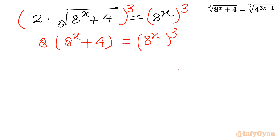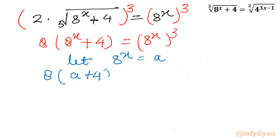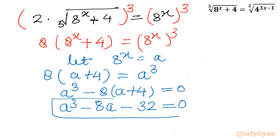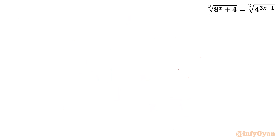Now let us use substitution. Let 8^x equal a. So our equation becomes 8 times (a + 4) equal to a^3, which gives us a^3 minus 8a minus 32 equal to 0. This is a cubic equation. Let's solve using factorization.